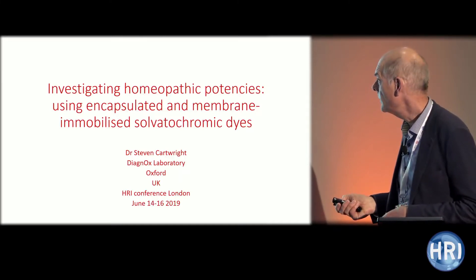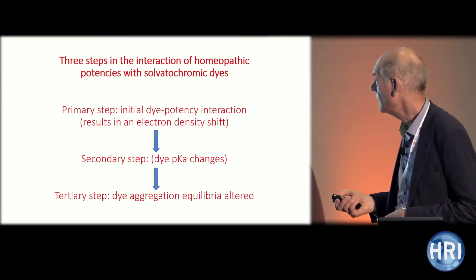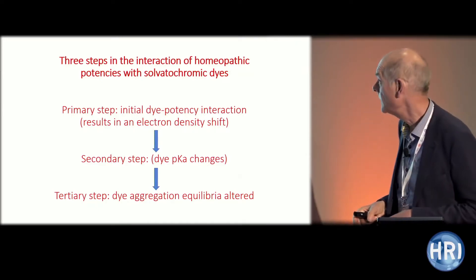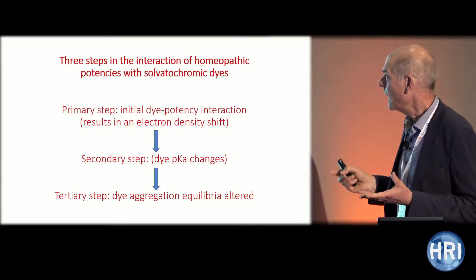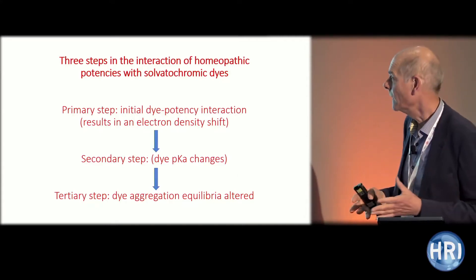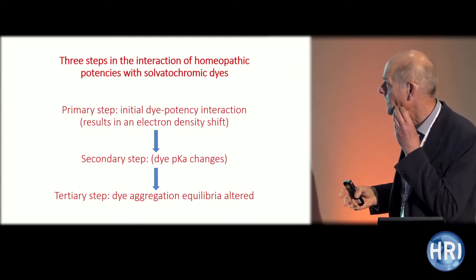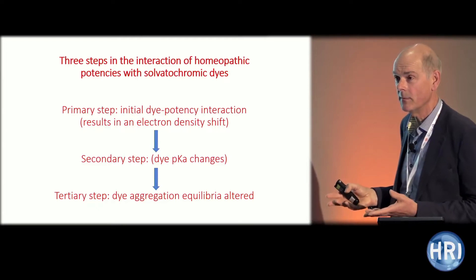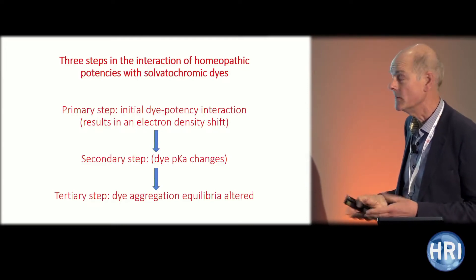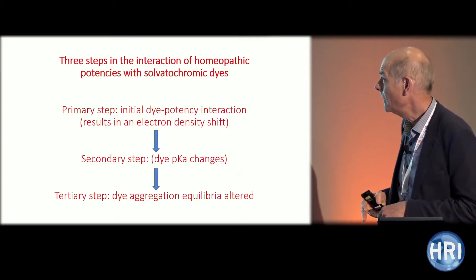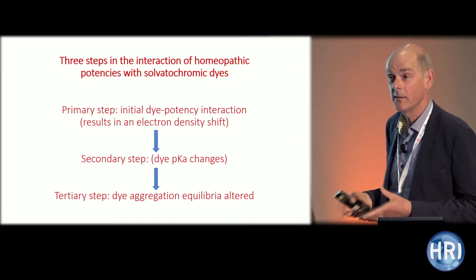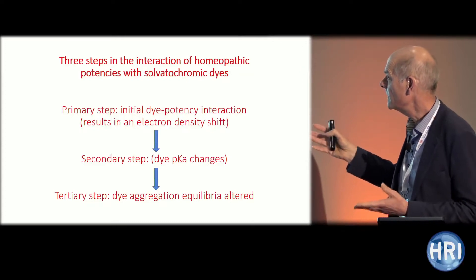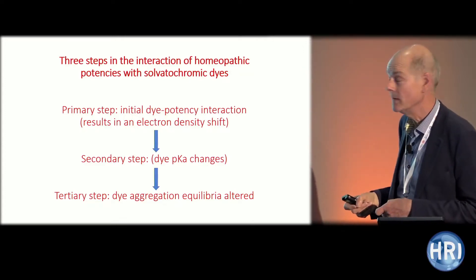Some of you may not be familiar with experiments done so far with solvatochromic dyes. It's difficult to run right through from the very beginning, but to summarize: it's now clear that a lot of solvatochromic dyes interact with homeopathic potencies. We've probably tested up to about 60 altogether, and they all respond to different degrees. It's been possible to elucidate three basic steps in the interaction.